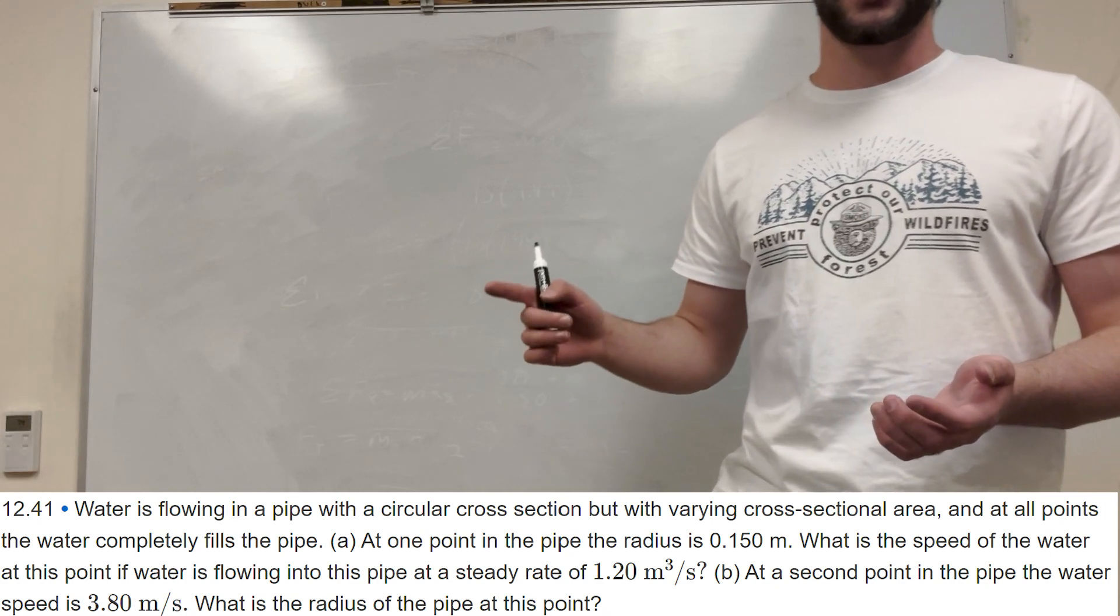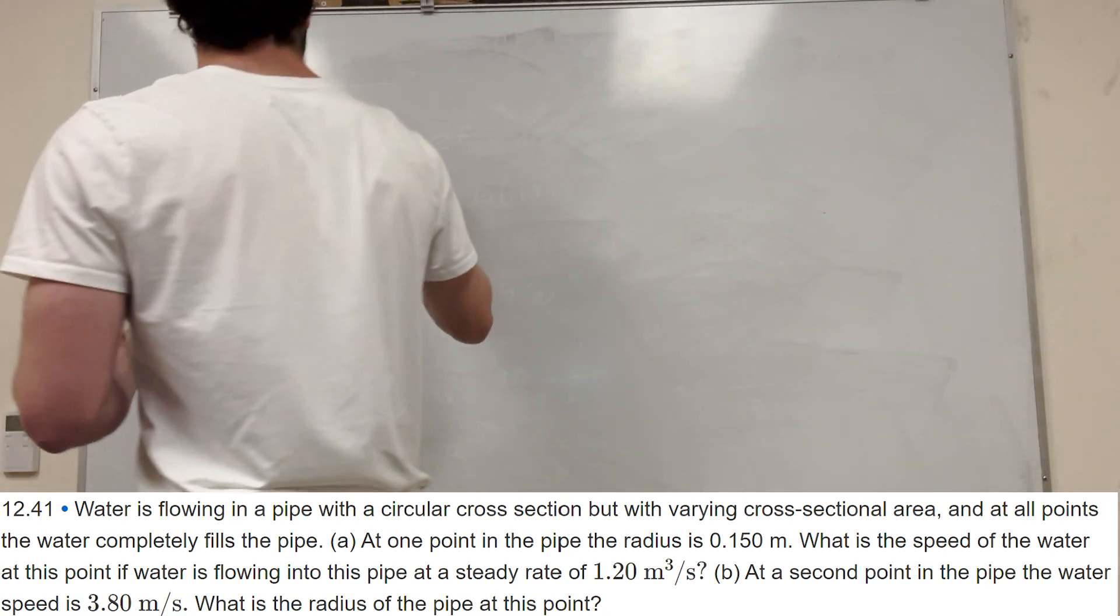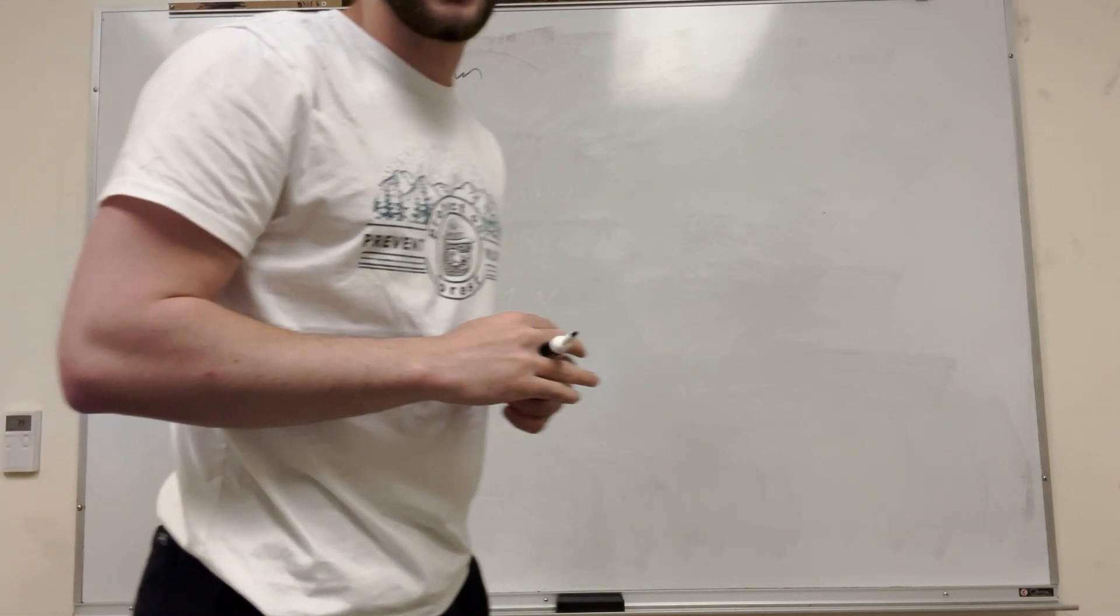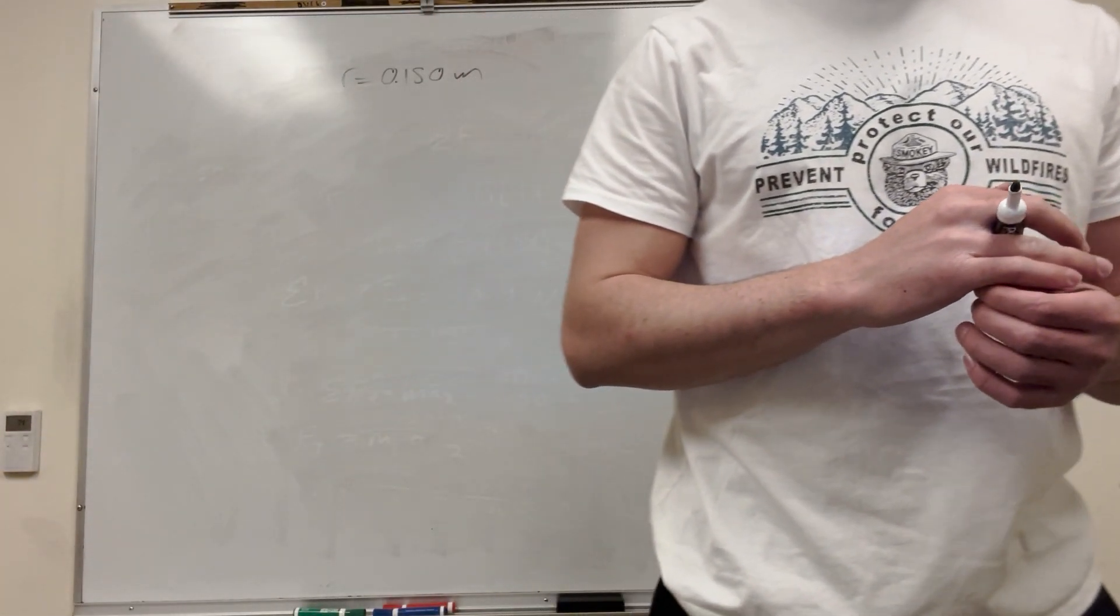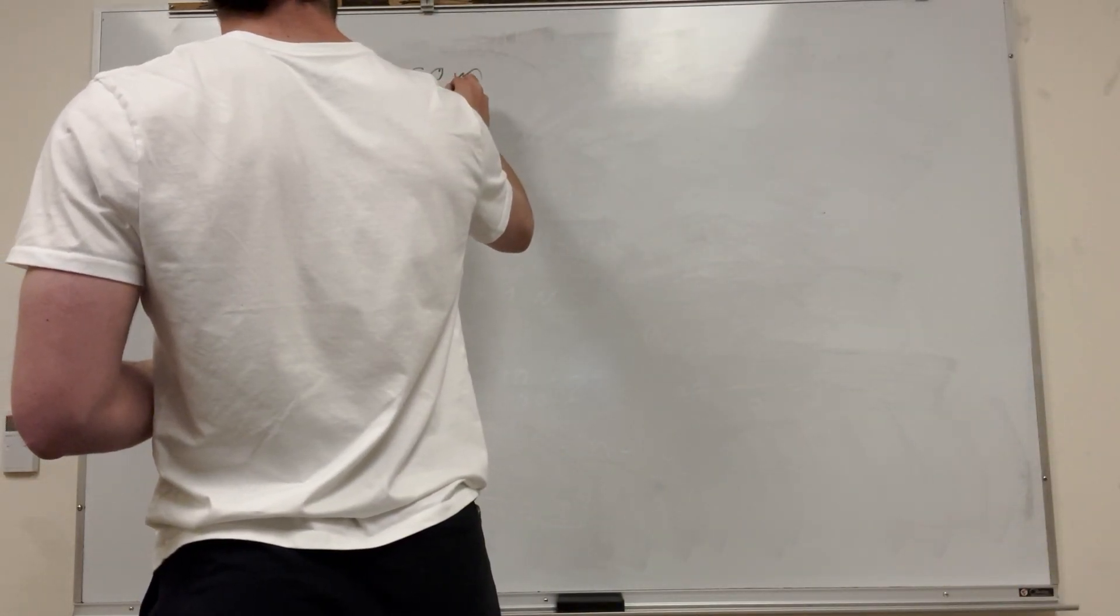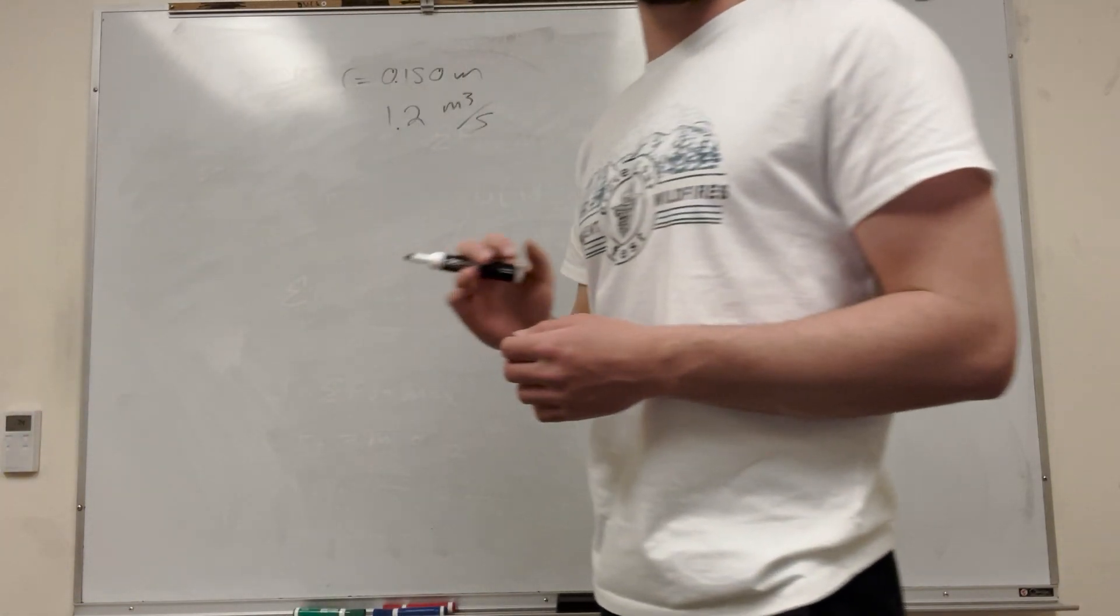At one point the radius is 0.15 meters. We have that the speed of the water at this point is 1.2 meters cubed per second, which is how fast it flows in.